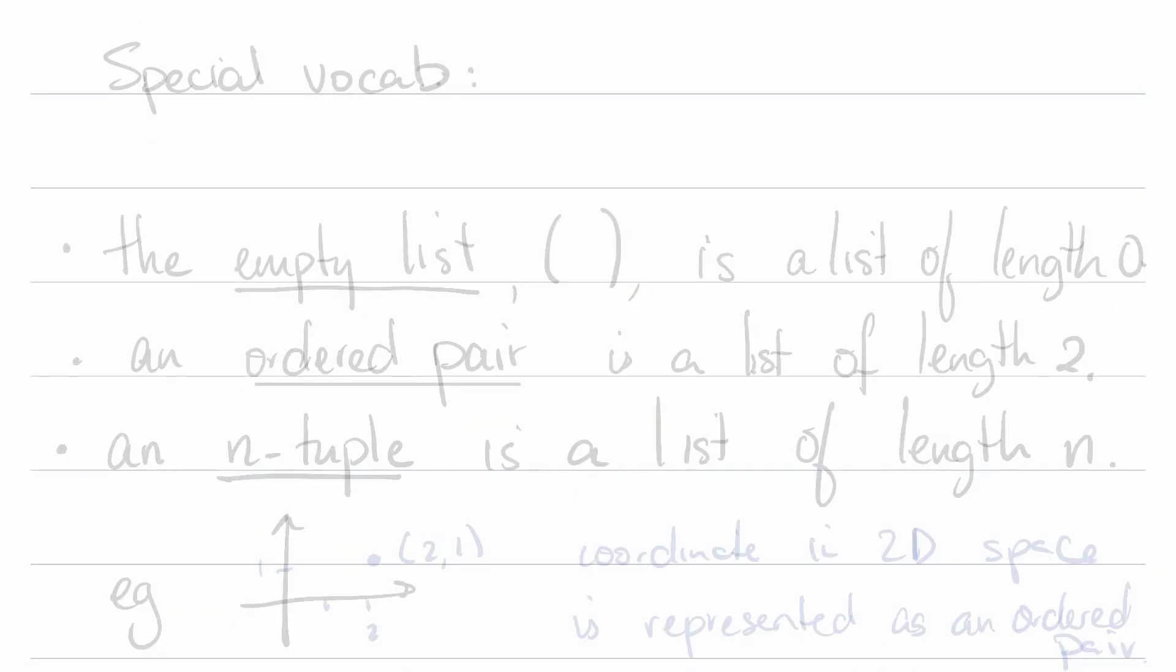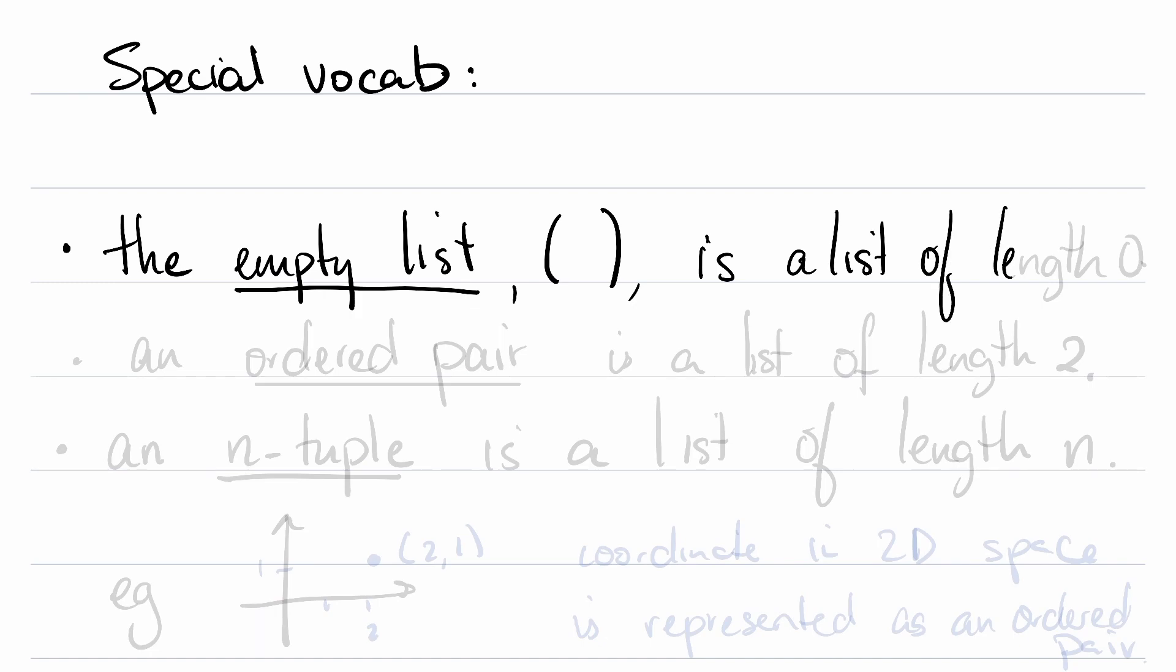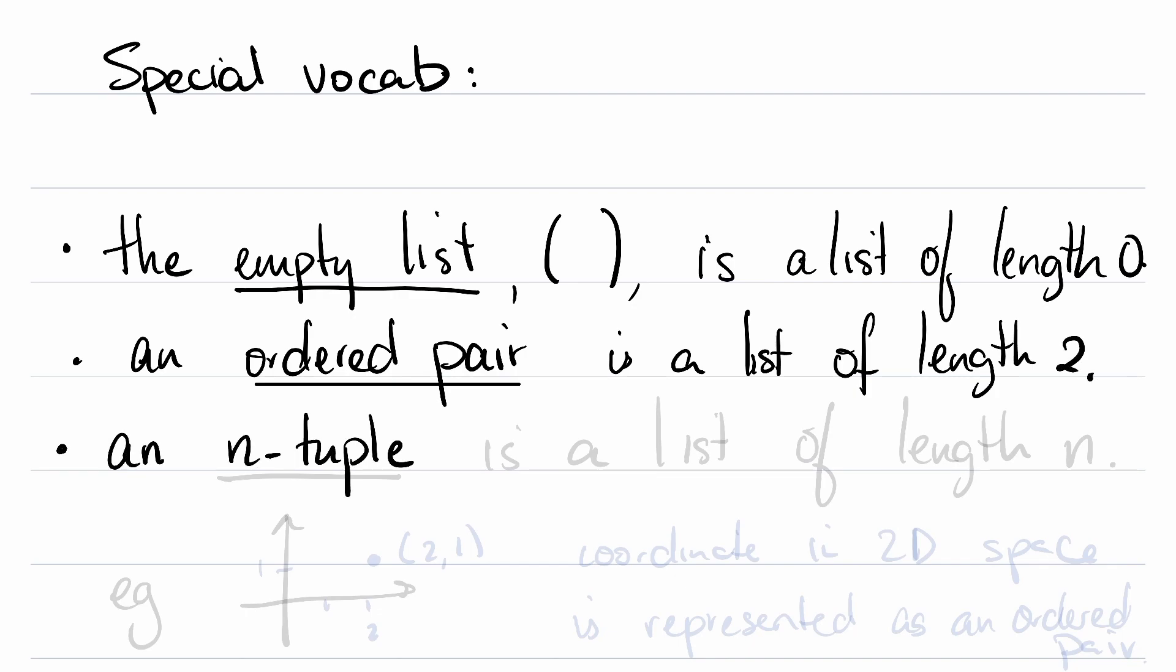When describing the length of lists, there's a lot of specialized vocabulary. Let's knock some of this out. The empty list, denoted by parentheses with nothing in them ( ), is a list of length 0. An ordered pair is a list of length 2. And more broadly, an n-tuple is a list of length n.